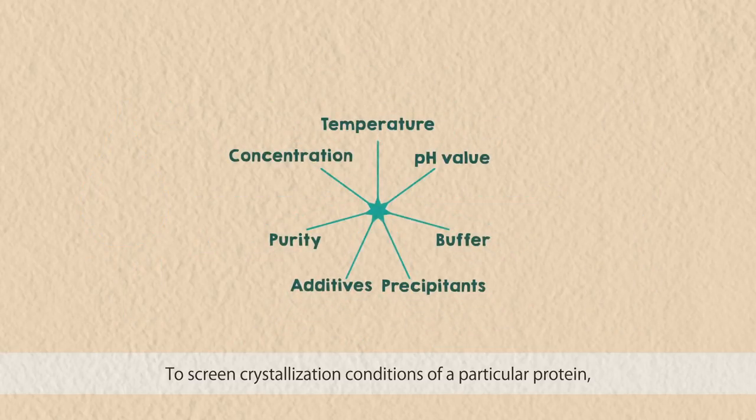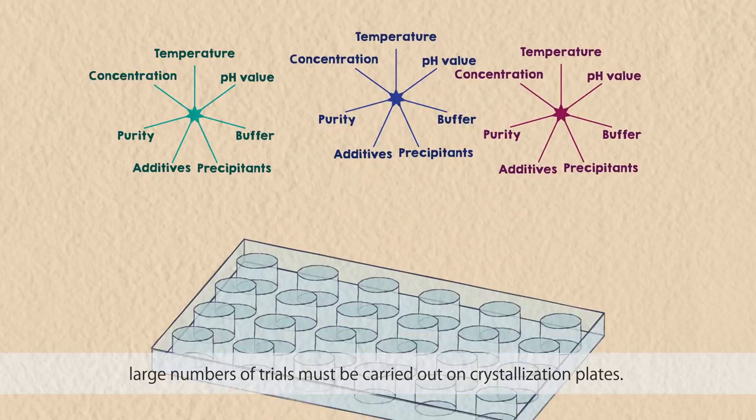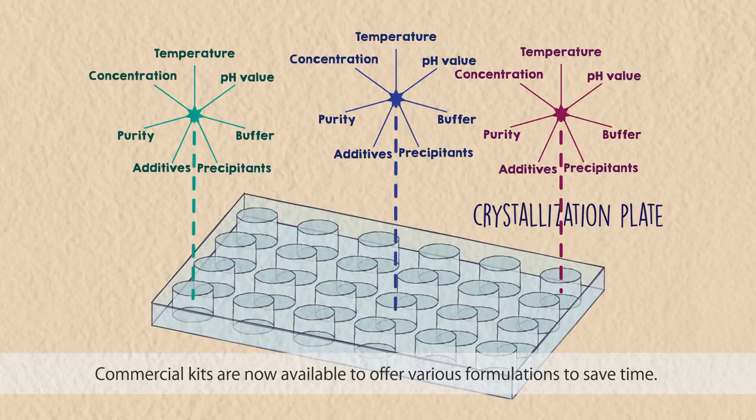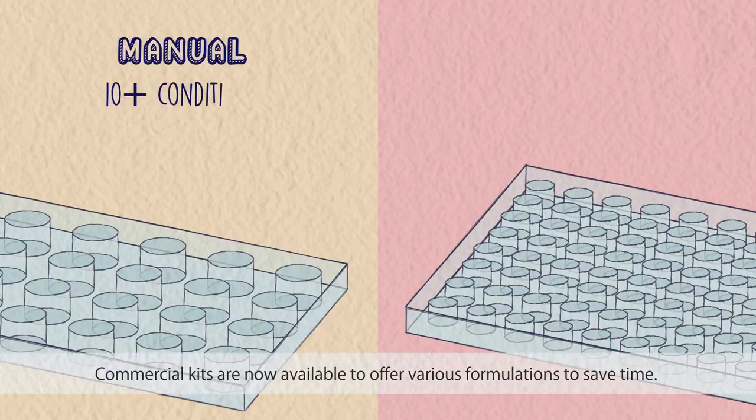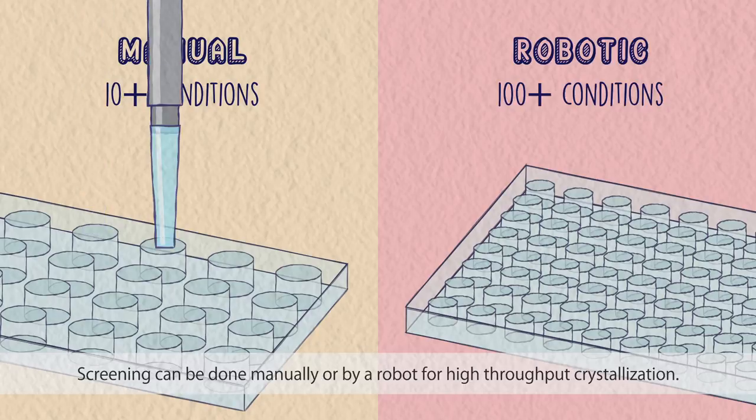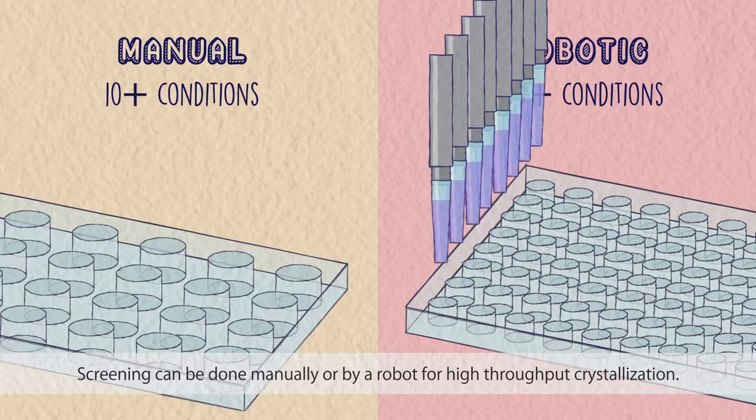To screen crystallization conditions of a particular protein, large numbers of trials must be carried out on crystallization plates. Commercial kits are now available to offer various formulations to save time. Screening can be done manually or by a robot for high-throughput crystallization.